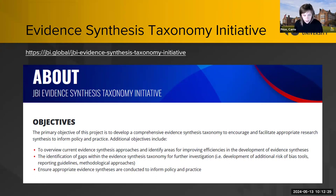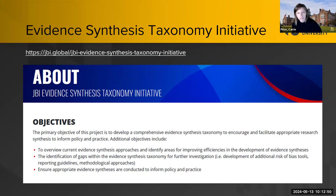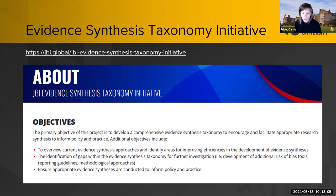The folks at JBI in Australia have something called an Evidence Synthesis Taxonomy Initiative. Their goal is to help the researcher choose the right review for the right reasons with the right methods for the right question. They've identified many different types of evidence synthesis coming out — you might see a systematic scoping review, a scoping systematic review, or a scoping gap map review. It's a really great tool and they'll link you up with some additional resources.